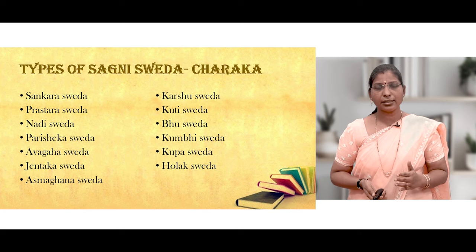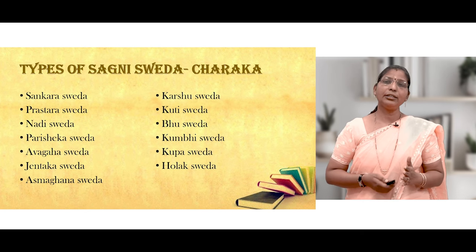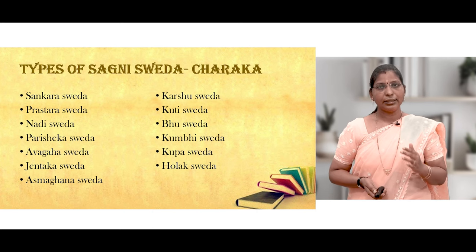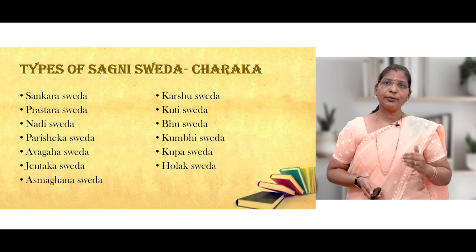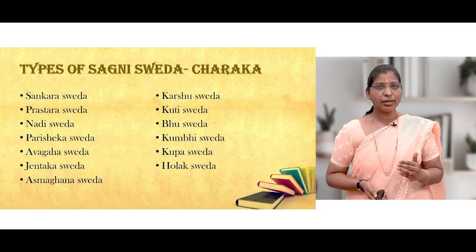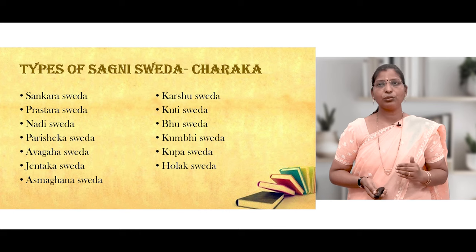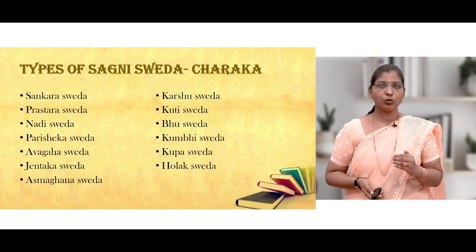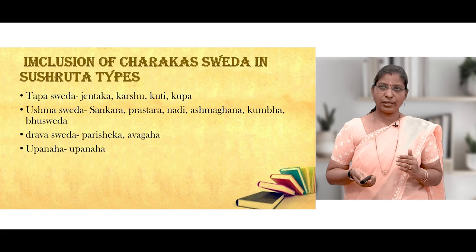Types of Sagnisweda: according to Charaka, there are 13 types — Sankarasweda, Prastharasweda, Nadi Sweda, Parishekasweda, Avagahasweda, Jentakasweda, Ashmagnasweda, Karshusweda, Kutisweda, Bhusweda, Kumbisweda, Kuppasweda, and Holakasweda.